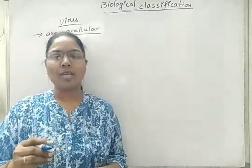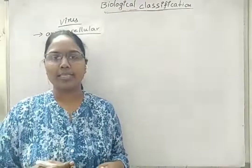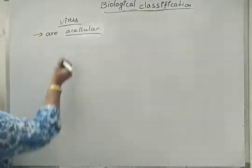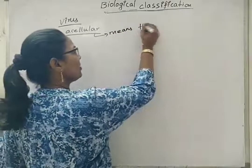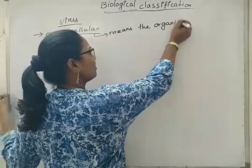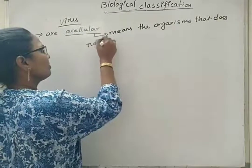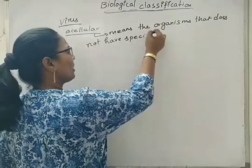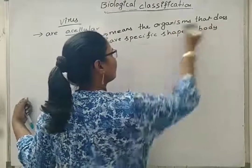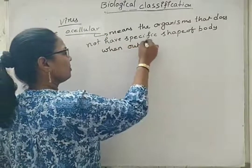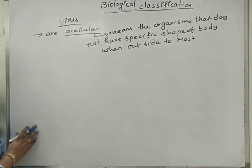Such organisms are not having a specific shape outside the host, so they are called as acellular organisms or acellular forms. Acellular means organisms that do not have a specific shape of body when outside the host. Such organisms are termed as acellular organisms.